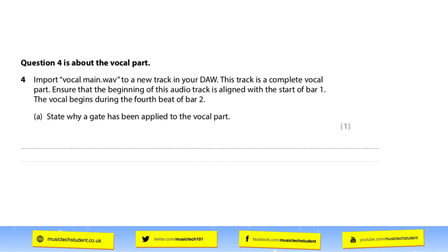Once again we are importing a track — this particular one is the vocal. You have to import it to a new track in your DAW, ensure it begins at bar one, and make sure it's synchronized. Always read that instruction carefully because sometimes it doesn't want you to put it at bar one, like in question three where it wants you to put it in a very specific place. The first question is just one mark: why is a gate used? Simply answer 'to remove noise' — that will get you the mark.